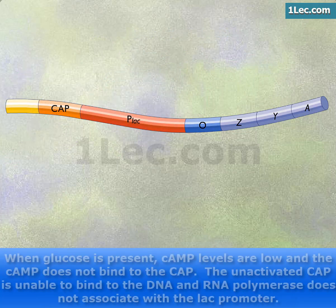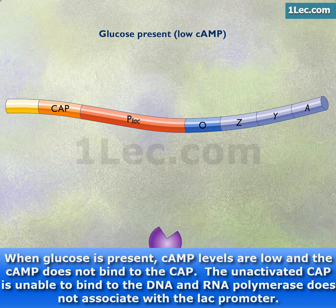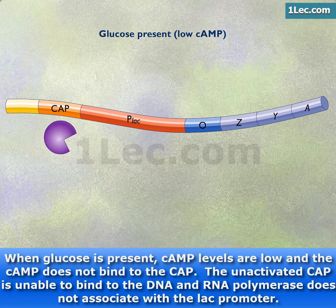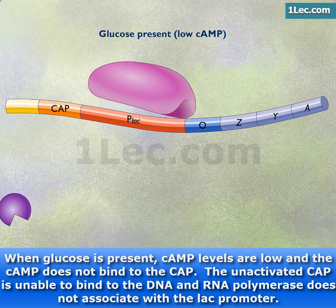When glucose is present, cAMP levels are low and the cAMP does not bind to the CAP. The unactivated CAP is unable to bind to the DNA and RNA polymerase does not associate with the LAC promoter.